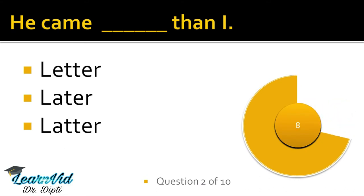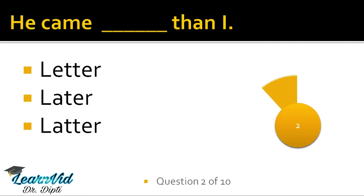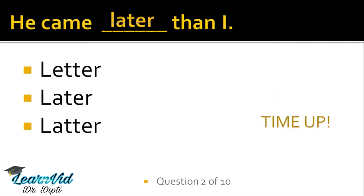Next one: he came dash than I. The correct answer is L-A-T-E-R. Now we all know L-E-T-T-E-R is chitthi — a written message. Or English alphabets — capital letter or small letter. And the second one is later, L-A-T-E-R, that means baad mein. For example, see you later. He came later than I — woh mere baad aya.